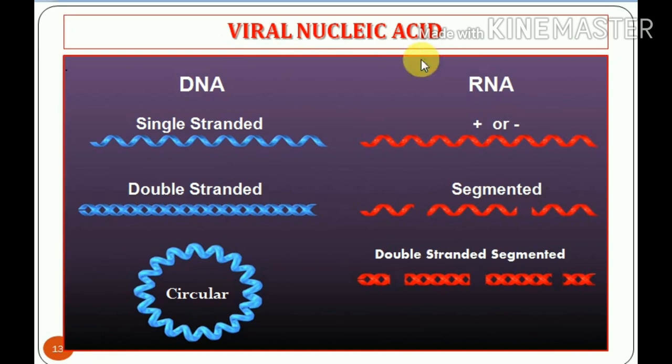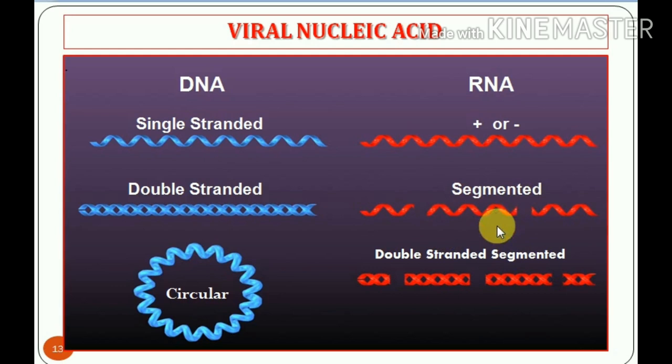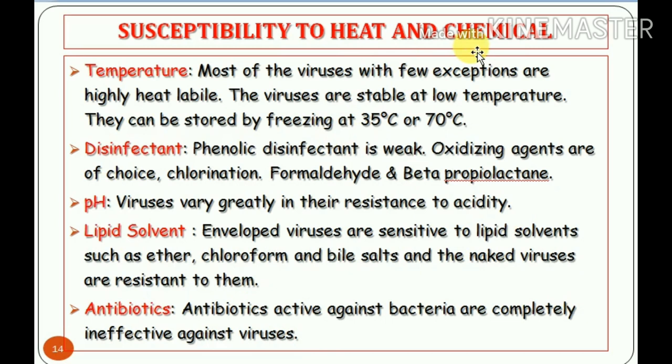Regarding the nucleic acid of the virus: as mentioned, a virus has either DNA or RNA — it can only have one, not both. DNA can be single-stranded, double-stranded, or circular. RNA can be positive-sense or negative-sense, single-stranded segmented, or double-stranded segmented.